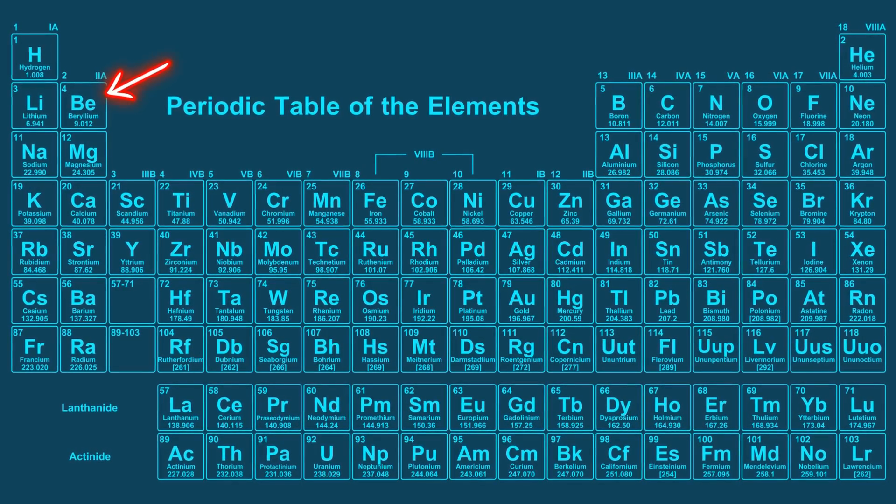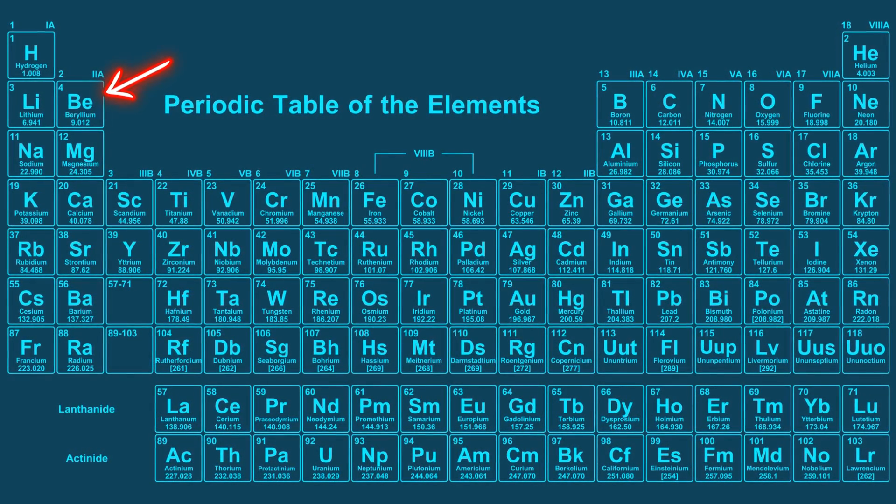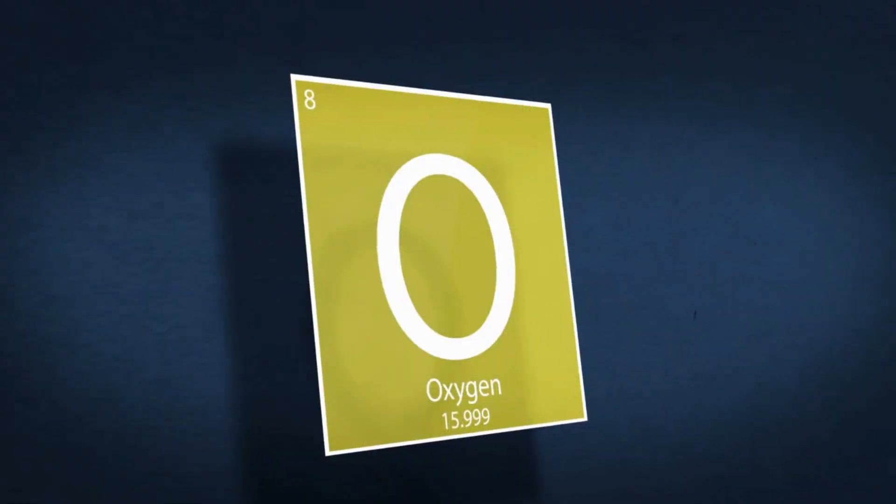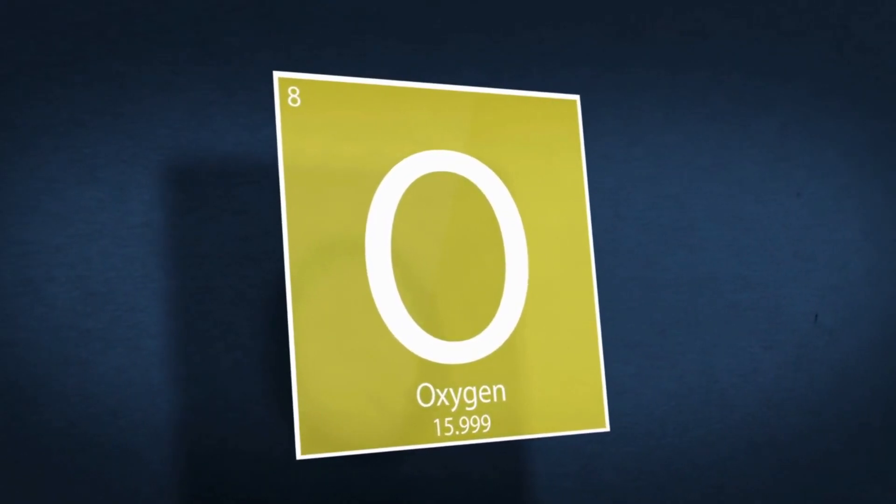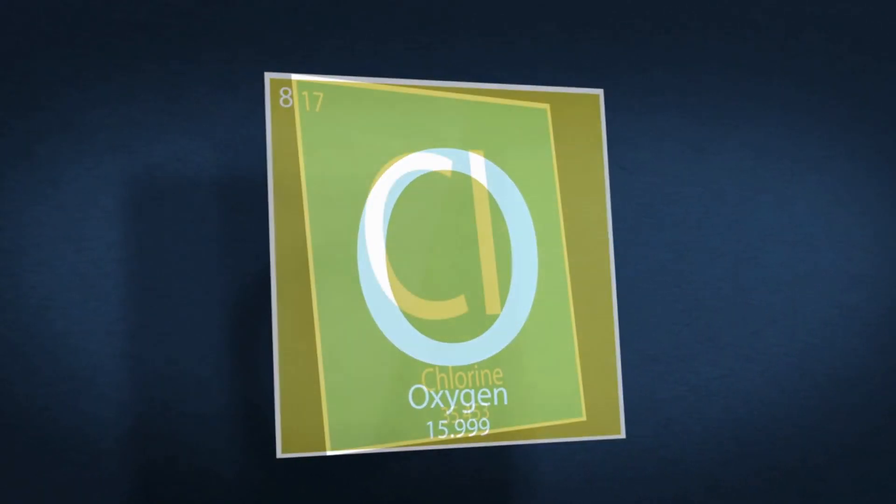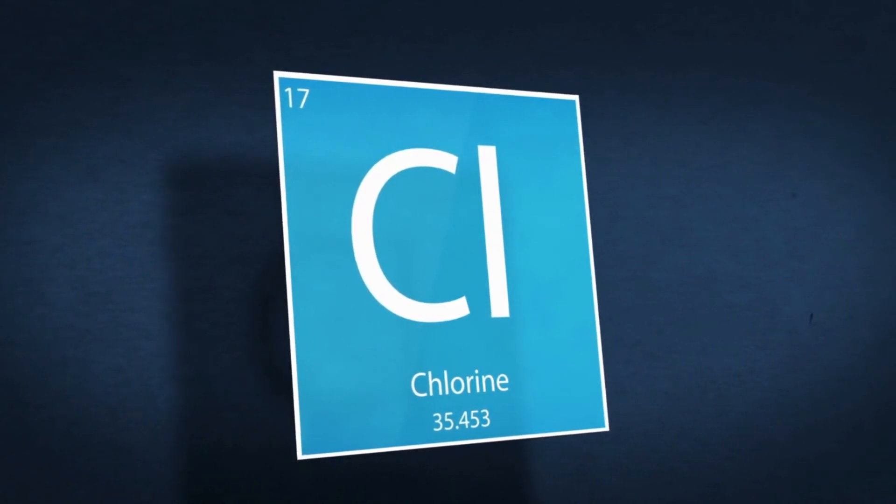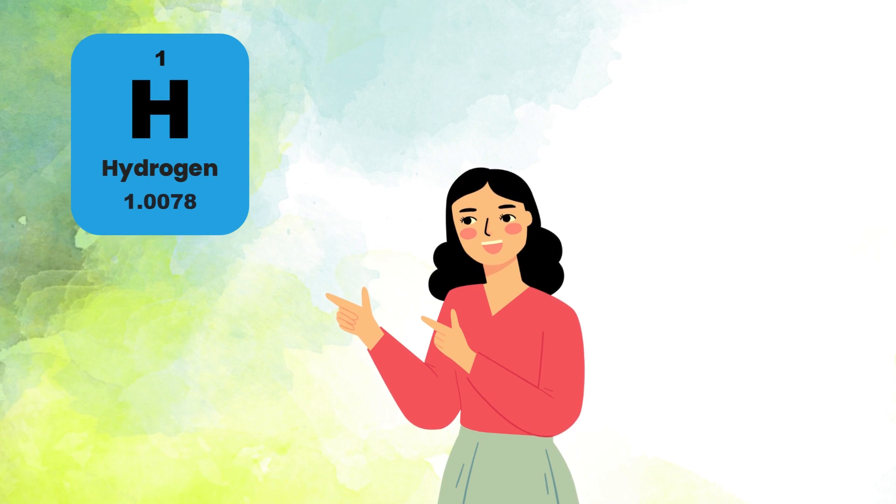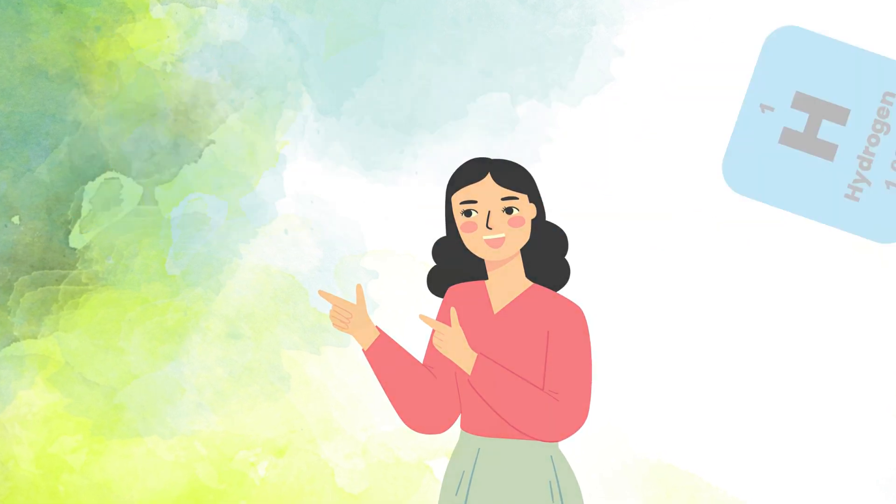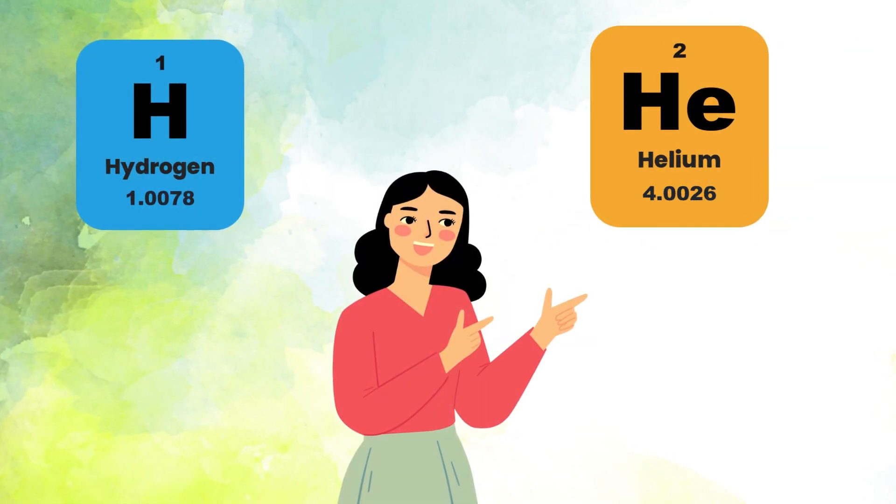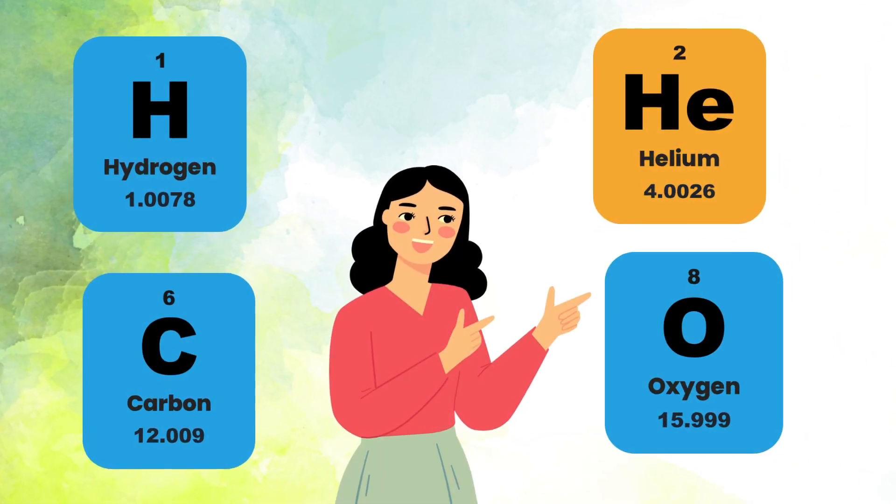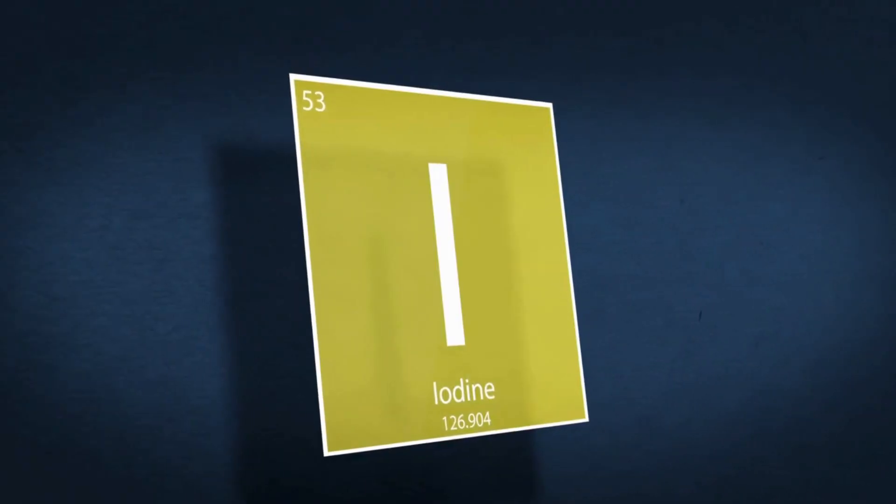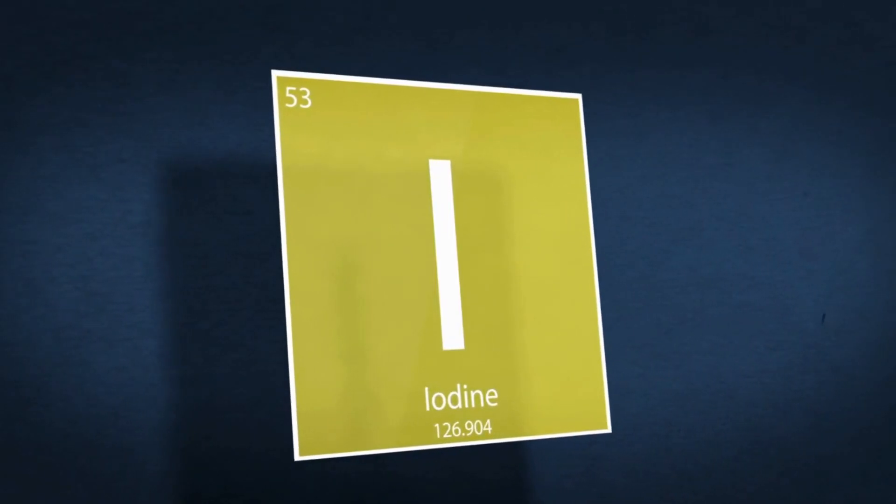Each square or box on the periodic table represents an element and contains valuable information about that element. The one or two letters is the element symbol. For example, uppercase H for hydrogen, HE for helium - as you can see the second letter is lowercase - C for carbon and O for oxygen. The name of the element is written below the symbol.